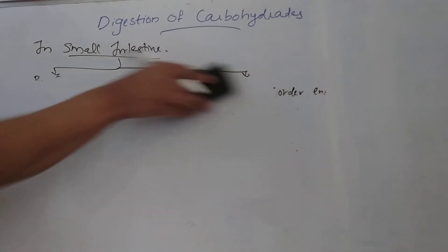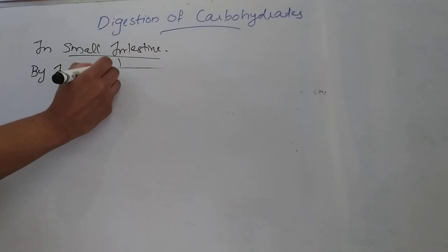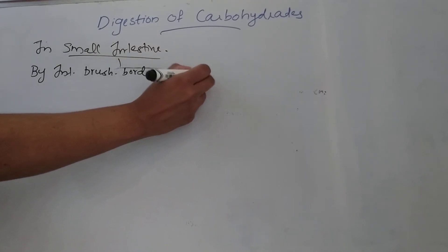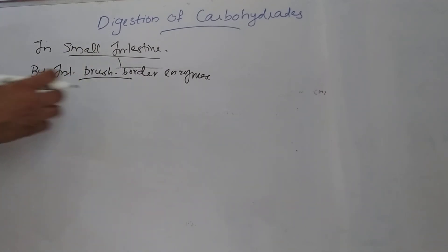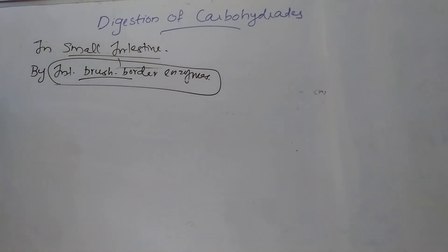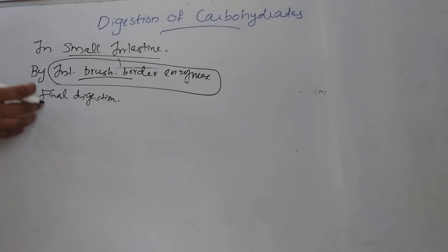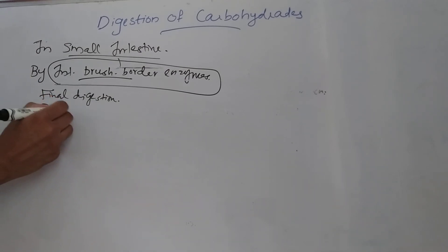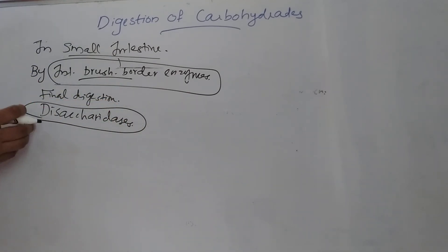Next is digestion by intestinal brush border enzymes. These enzymes are responsible for the final digestion of carbohydrates. They are called disaccharidases because they convert disaccharides to monosaccharides — for example, lactase, maltase, isomaltase, and sucrase.